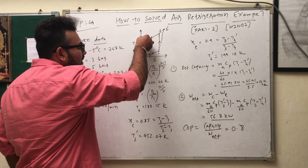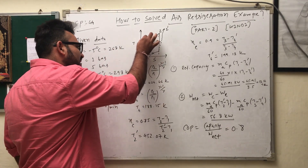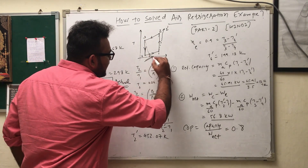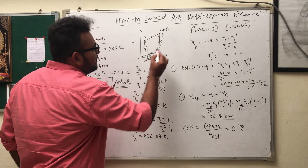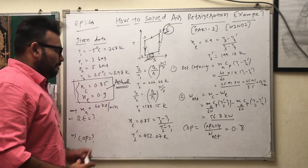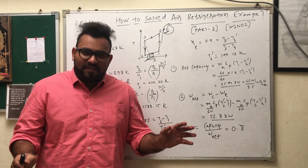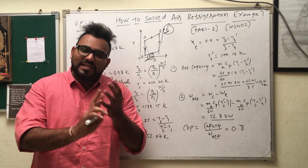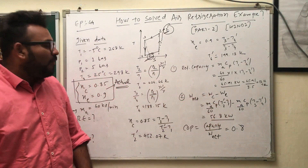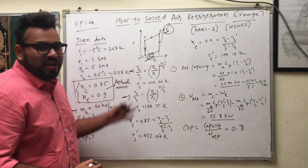In the actual cycle, process 3→4 is not isentropic — the line goes differently. Since isentropic efficiency is given, it means you need to find T4-dash and T2-dash indirectly. As I taught in episode 43, whenever a refrigeration example comes, it will always give two pressures and two temperatures, and the remaining two temperatures can be found from these equations.